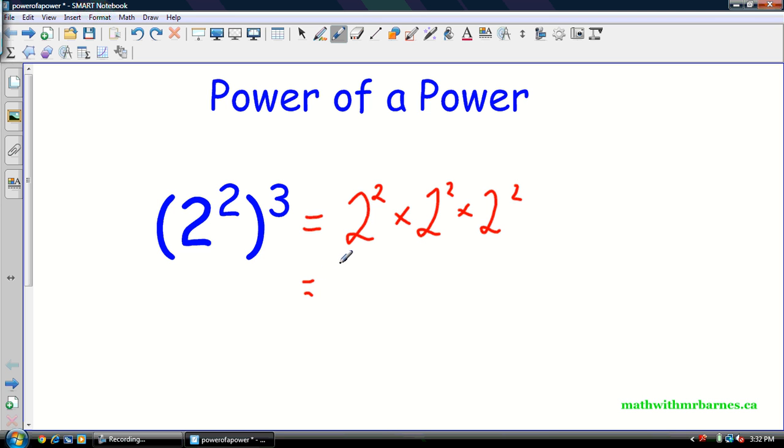But we also know from our last video that when we're multiplying powers with the same base, we add the exponents. So I have 2 to the 2, so I go 2 plus 2 plus 2, so that's 2 to the 6. So what I have is this equals 2 to the 6. Another way we could have done this, actually a lot simpler, would be simply to multiply these exponents. When we have a power of a power, we multiply exponents. Very important.